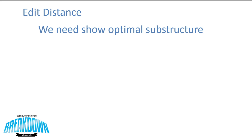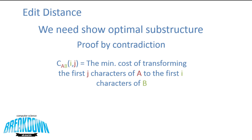To do this, we need to show that the edit distance problem contains the property of optimal substructure, and this can be done using a proof by contradiction. Before we do that, let's define a few things. Let c of a and b at i and j equal the minimum cost of transforming the first j characters of a into the first i characters of b.